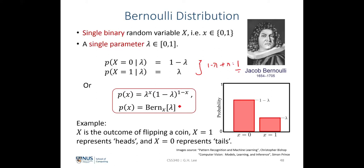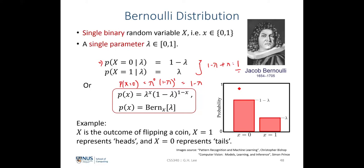The probability distribution can then be written as P of X equals lambda to the power of X, multiplied by 1 minus lambda to the power of 1 minus X. If X equals 0, we get lambda to the power of 0 times 1 minus lambda to the power of 1, giving 1 minus lambda. If X equals 1, the overall probability equals lambda. This is also represented graphically using a histogram.